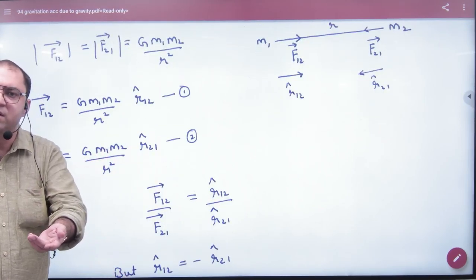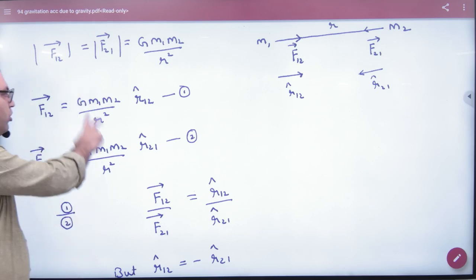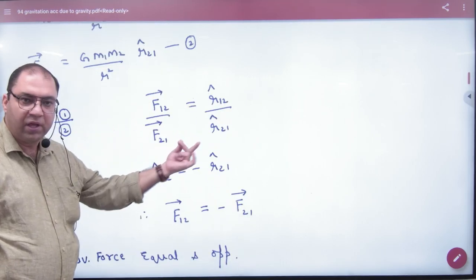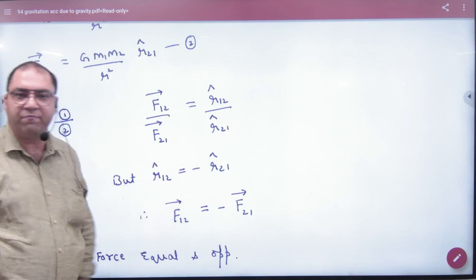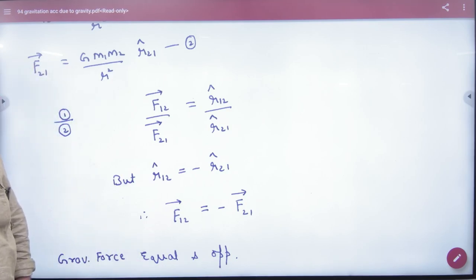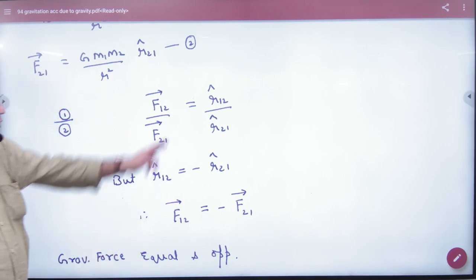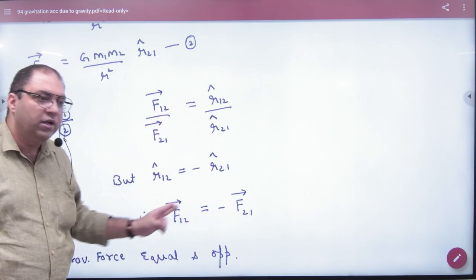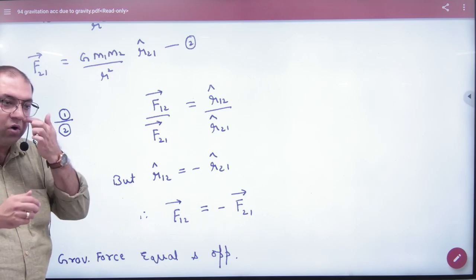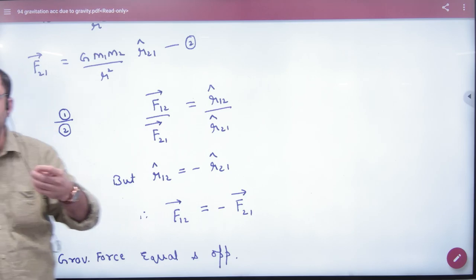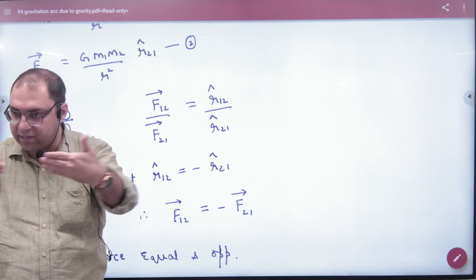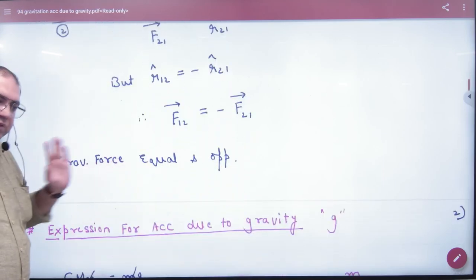These are my unit vectors, and there is no difference if you take a magnitude. You divide them. What will be after this term? Cancel. r1,2 cap, r2,1 cap, and the magnitude is 1. So after cancel it, what will come from here? F1,2 vector is minus F2,1 vector. This means that Newton's law is equal and opposite. The two forces are equal and opposite.